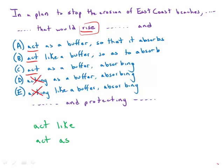In the last half of the sentence, we have another parallel structure describing the action of the buffer. The second part is 'and protecting,' so we need something in parallel to that. 'It absorbs and protecting' doesn't work. 'To absorb and protecting' doesn't work. 'Absorbing and protecting' works fine.